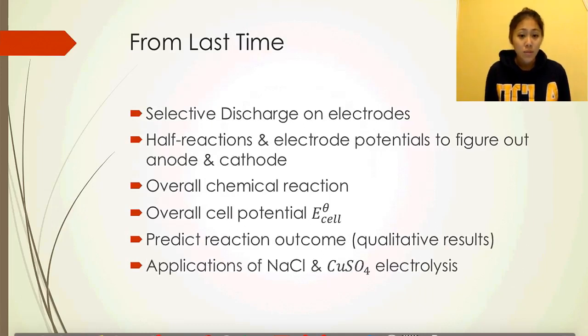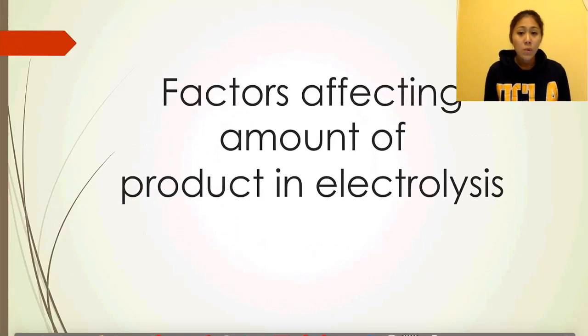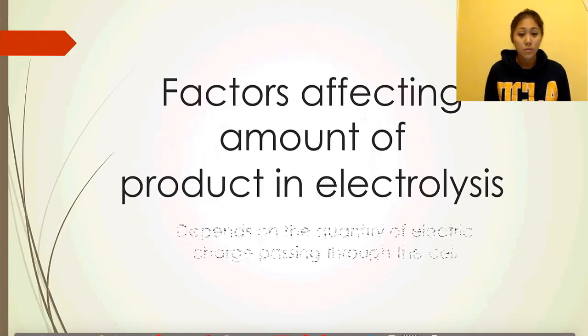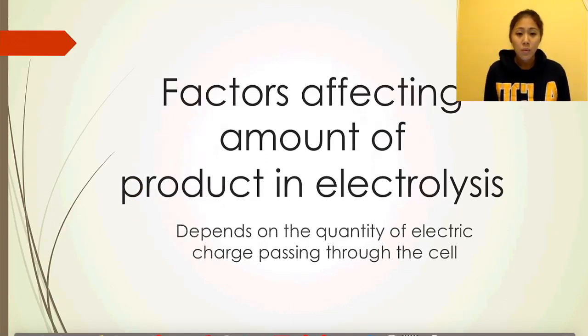We looked at specifically the applications of sodium chloride and copper sulfate electrolysis in lesson 9. Today we're going to look at the factors that affect the amount of product in the electrolysis. A quick tip is that it depends on the quantity of electric charge passing through the cell.